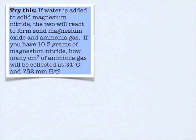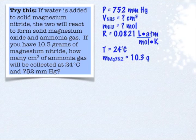Welcome back. So here's what I had for the relevant information on this problem. It's telling me that it has got a pressure of 752 millimeters of mercury. It's asking me for my volume of ammonia in cubic centimeters. I'm going to have to find the moles of ammonia.